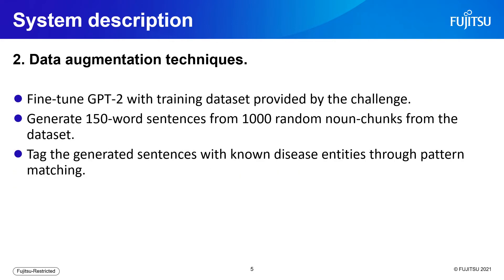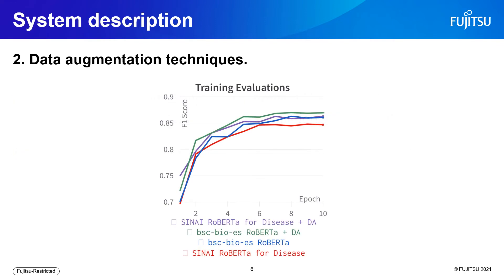Next, in our system description, we cover data augmentation techniques. We used the challenge training set data as input to fine-tune a GPT-2 model for 10 epochs. Then we used 1,000 random noun chunks from the provided Twitter data to generate sentences of 150 words with the fine-tuned GPT-2 model. Next, we used pattern matching with known entities to tag the diseases in the generated text. Here we can see the performance of the data augmentation techniques. This plot shows the selected models' performance during training, comparing results with and without augmented data. The plots in red and blue are trainings without augmented data, and the plots in green and purple show that models trained with augmented data improve their initial performance.